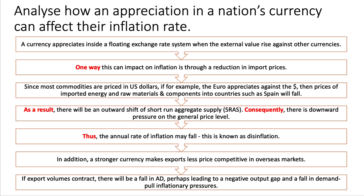Since most commodities traded around the world are priced in US dollars, if the euro appreciates against the dollar, then the prices of imported energy, raw materials, and component parts in countries such as Spain will come down. As a result, there will be an outward shift of short-run aggregate supply.